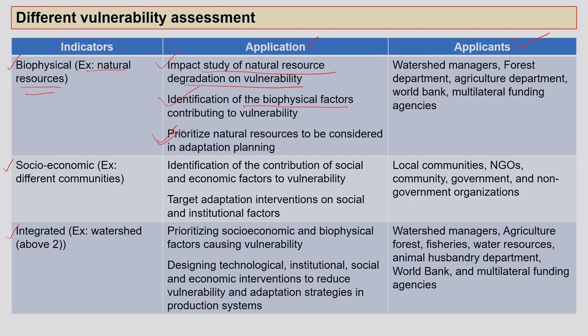For example, a particular biomedicinal plant — a natural resource — could generate livelihood and provide important compounds. If climate change causes temperature to rise very high in an area where that plant survives only in low temperatures, the plant's biological activity will be affected — chlorophyll, hormones like gibberellin and ethylene, and overall biochemical processes can change, making the plant vulnerable. Biophysical indicators also help prioritize natural resources for adaptation planning. Applicants include watershed managers, forest departments, and agriculture departments.